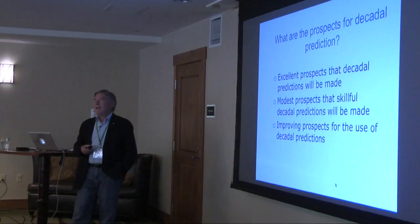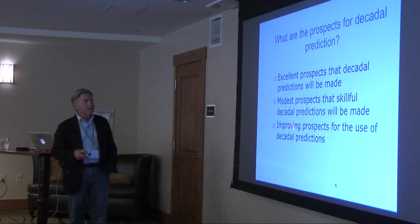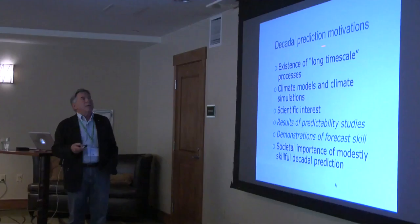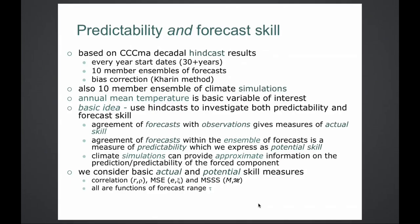These weren't exactly outstandingly difficult predictions, but of course they came true — and this is perhaps coming true to some extent. Then I asked: what are the motivations for doing Decadal Predictions? A couple of the reasons for doing this were the results of predictability studies and demonstrations of forecast skill. So how do these things fit together? I will try to run through some calculations and considerations about predictability.